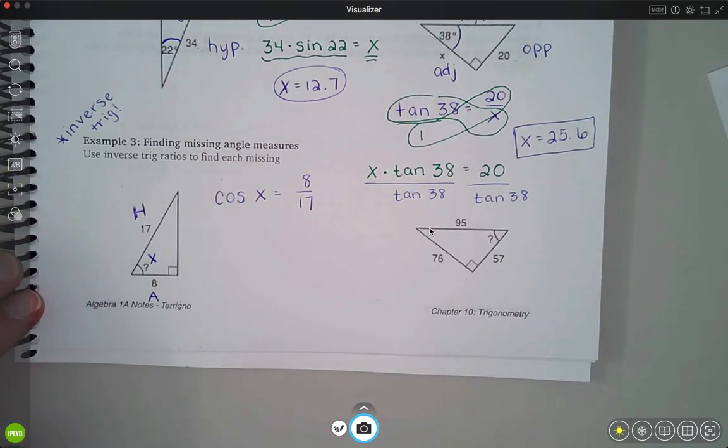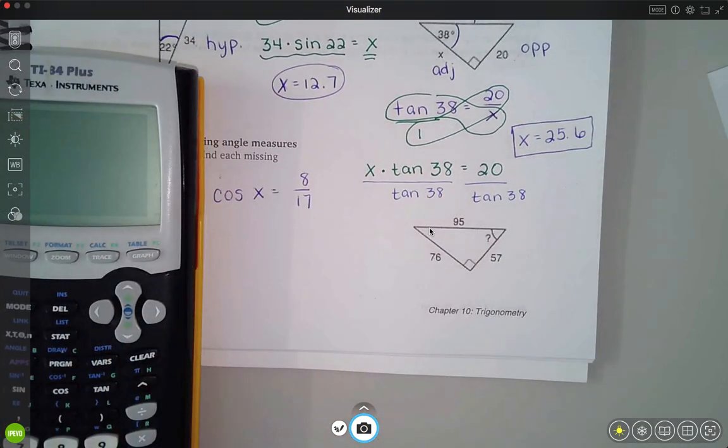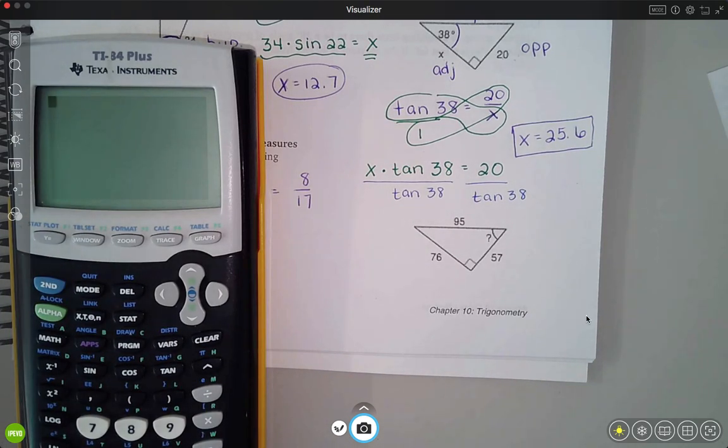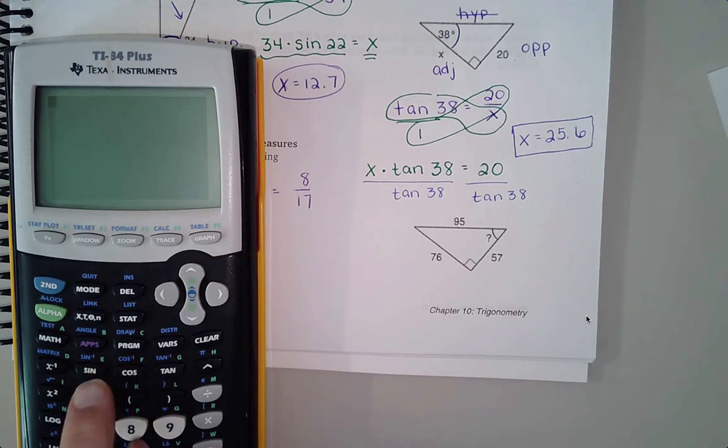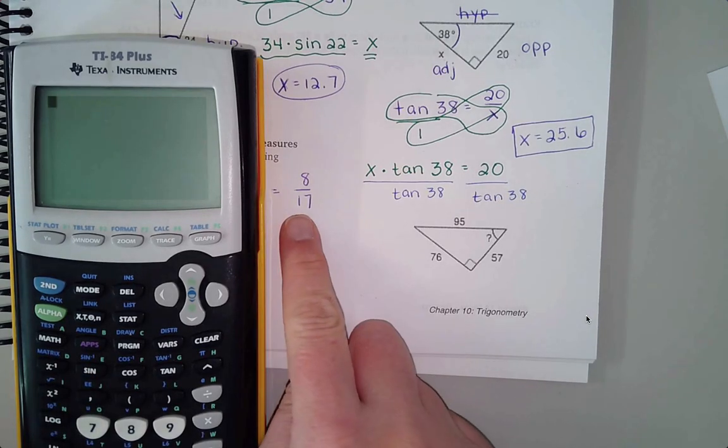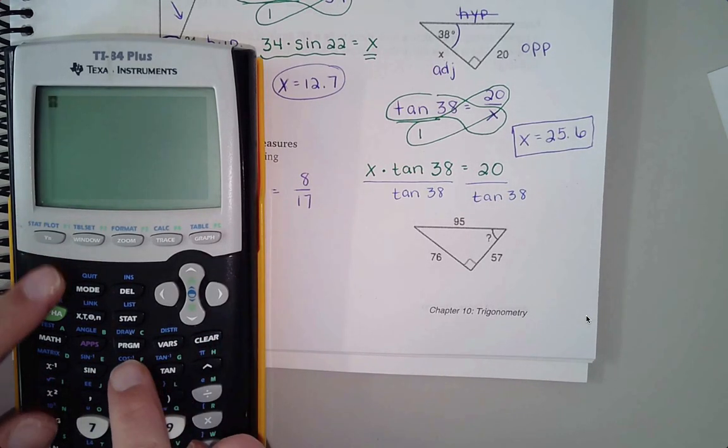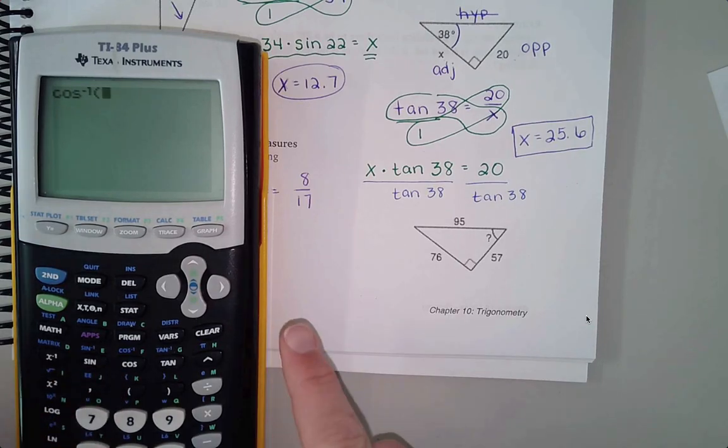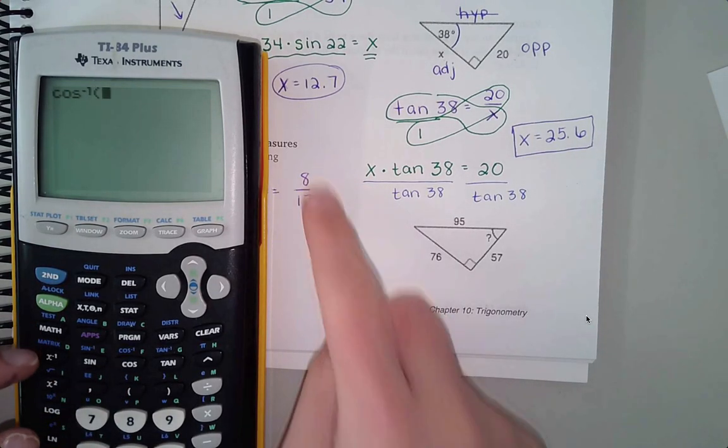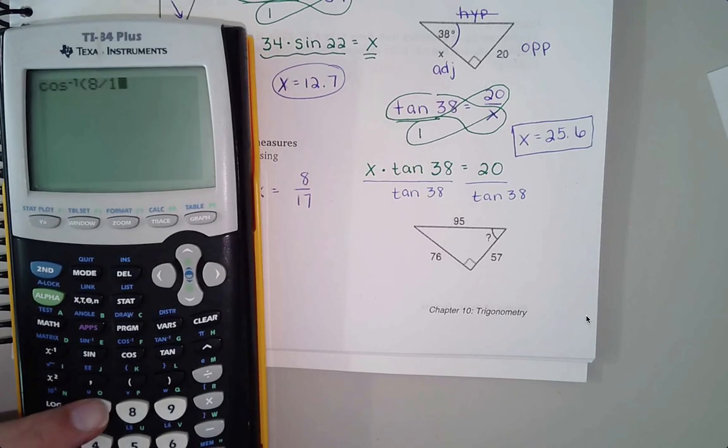The inverse trig functions, that's not like an inverse like we've been talking about earlier in the year. The inverse trig functions are the ones that are up above the sine, cosine, and tangent key. See the ones with the little negative one there. So what we are going to type in here is we're going to type in second cosine. Because cosine is the function we're using, and then we do 8 divided by 17.